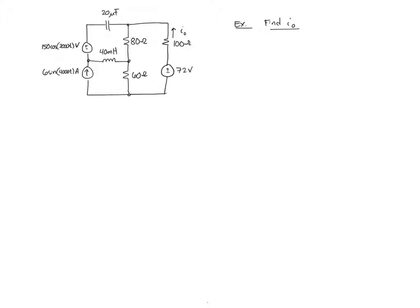Note that in this problem we have three independent sources. The special case about this problem is that each source has a unique frequency. We have cosine 2000t, a sine 4000t, and a DC source. This problem must be solved using superposition.